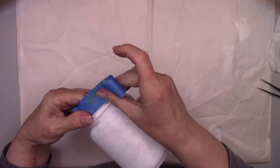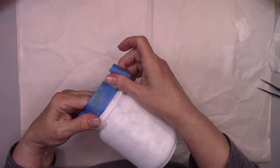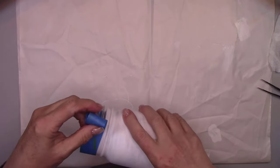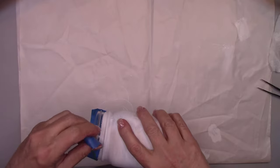But before I put the matte sealer on this jar, I'm going to cover the threads with some masking tape to protect them. So when I'm done, the soap dispenser lid will screw on properly.